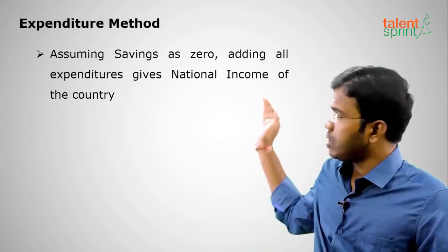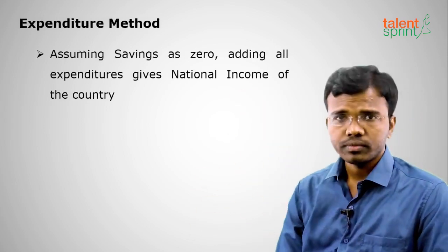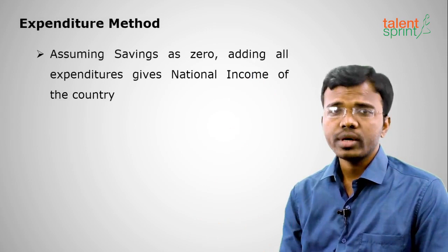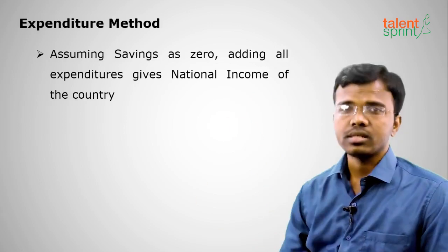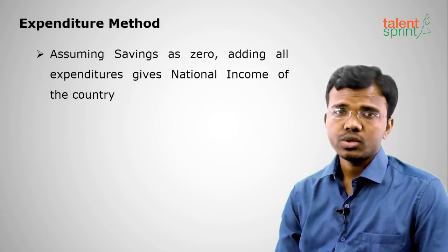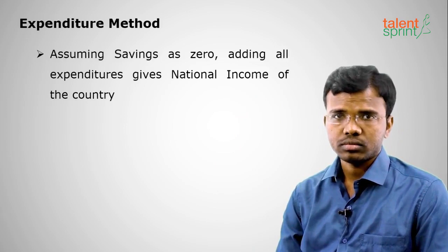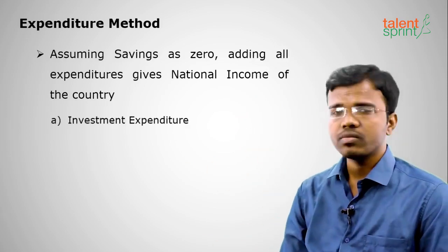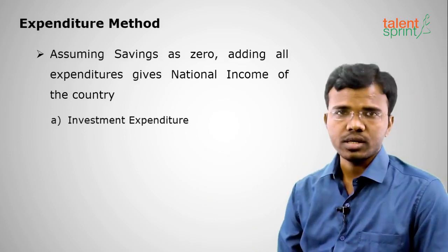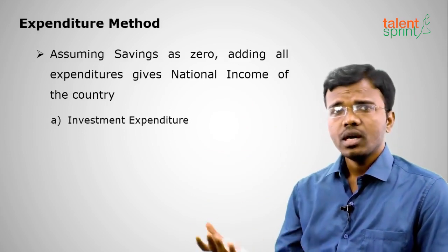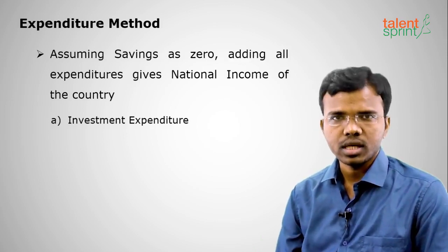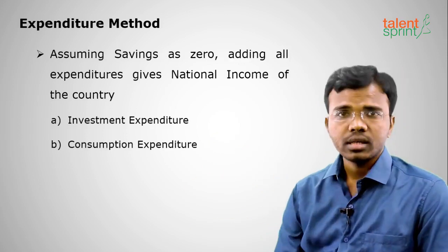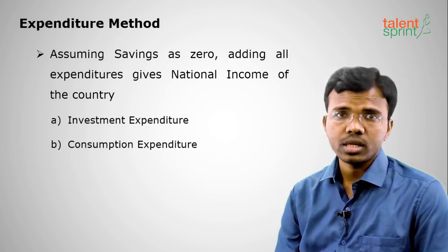Under the expenditure method, income equals expenditure plus savings. Assuming savings as zero, income equals expenditure, so adding all expenditures gives national income. There are three types of expenditures: investment expenditure made by the manufacturer to produce a product, and consumption expenditure made by the consumer to buy the product.